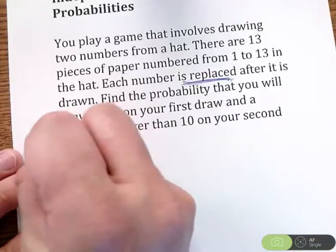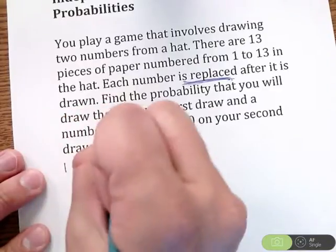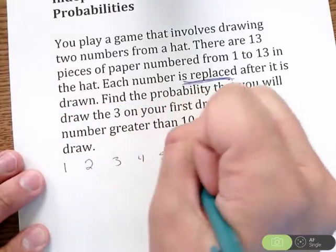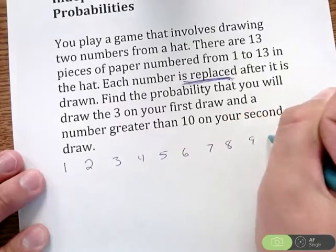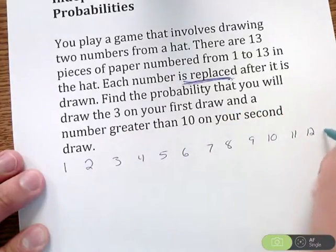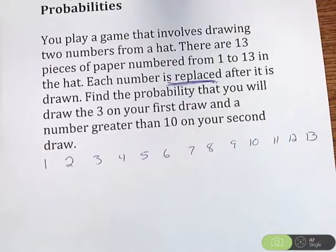So first thing, I'm a little bit more visual, so I'm going to write out 1, 2, 3, 4, 5, 6, 7, 8, 9, 10, 11, 12, 13. So I have 13 different options. That's what my sample space looks like.